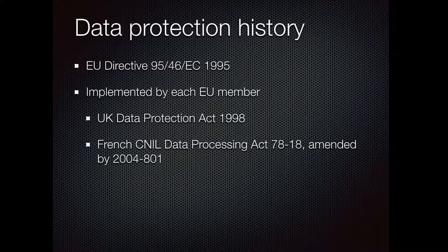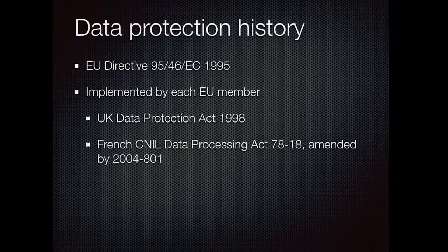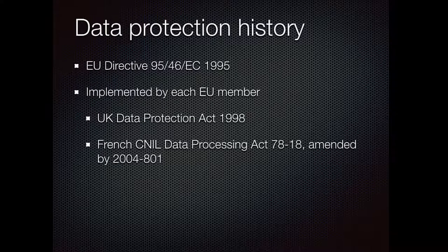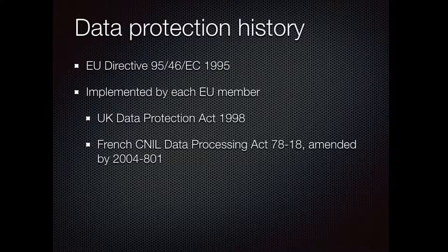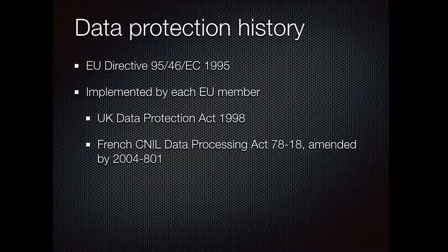This was all about storing data on EU citizens in the EU. Of course, data travels outside the EU, and the EU was concerned about how that data was handled — particularly when transferred to the US. So in 2000 they set up a scheme called Safe Harbor. The idea was that American companies storing data on EU citizens could hold it in the US under the auspices of the EU directive, maintaining the same level of data protection standards.